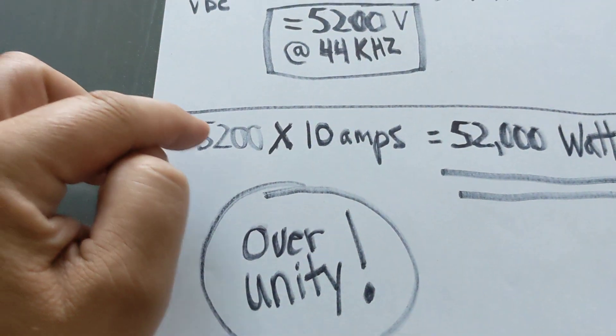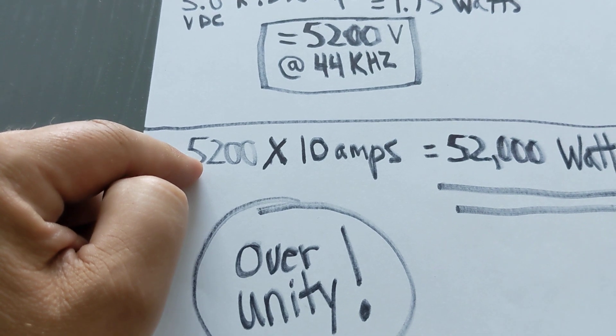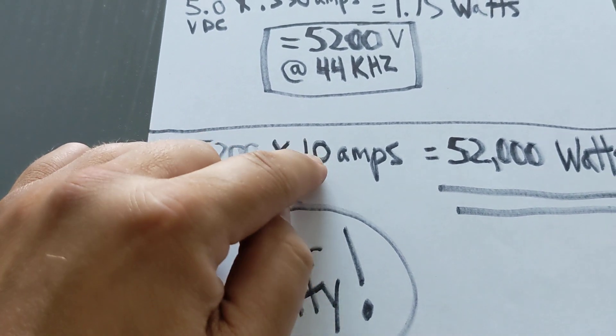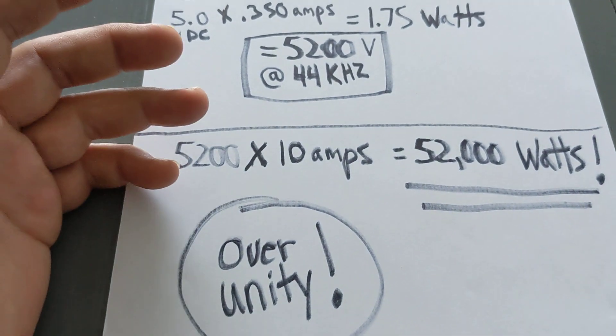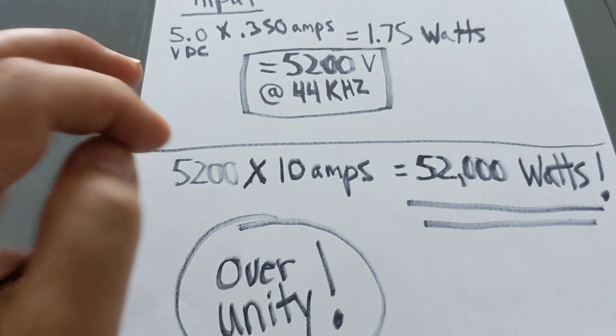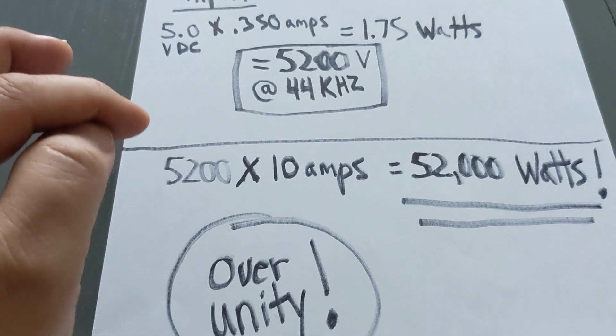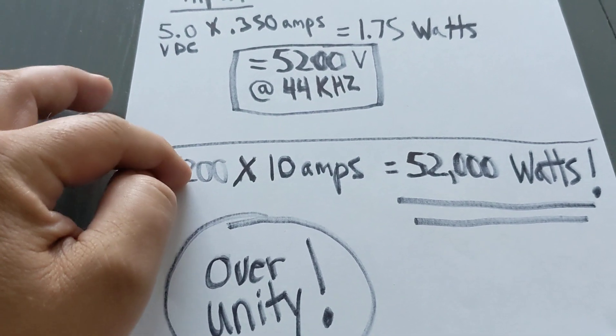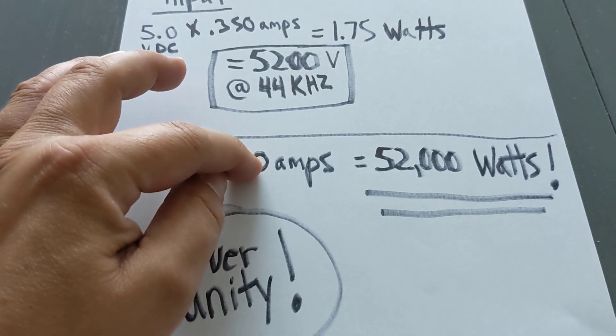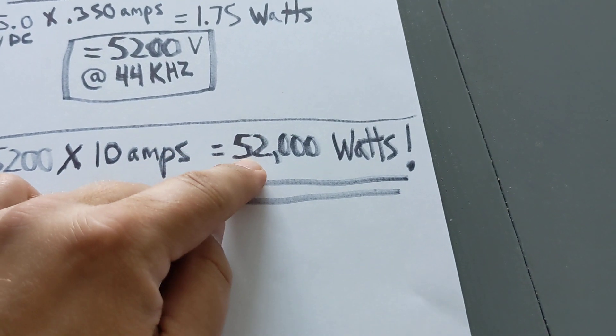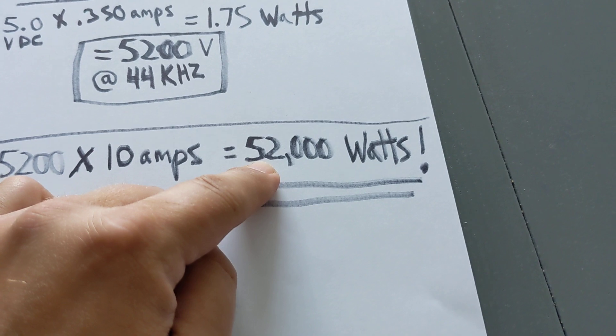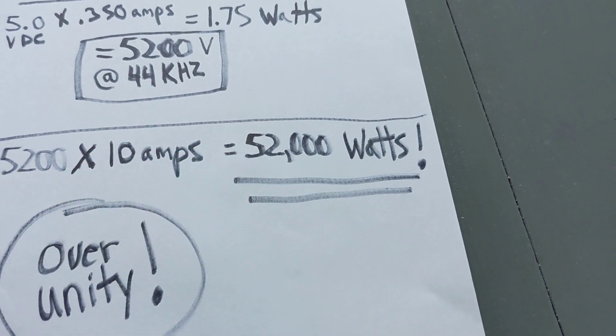So let's go to the next part. So now we've got 5,200 volts. Now, say our system is capable of creating 10 amps. I low-balled it. I'm hoping to get 100 amps, but I'm just low-balling it. So 5,200 volts AC times that by 10 amps. That's an incredible 52,000 watts.